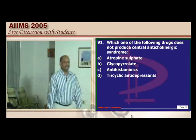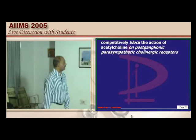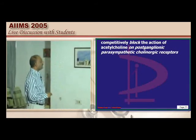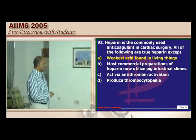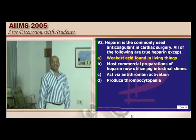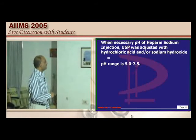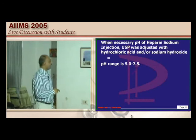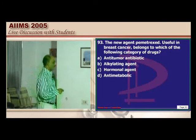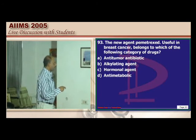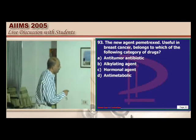Opioid receptors are responsible for everything except diuresis. The universal adverse effect of opioids is constipation. Glycopyrrolate acts on post-ganglionic parasympathetic cholinergic receptors — it is not centrally acting. Heparin is not a weak acid; it has a pH range between 5 to 7.5 and is given as heparin hydrochloride.